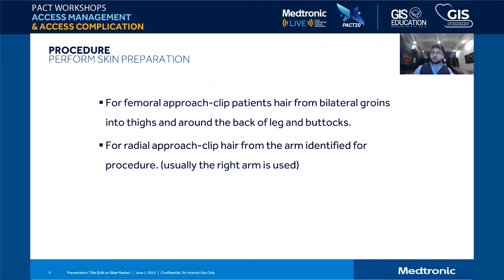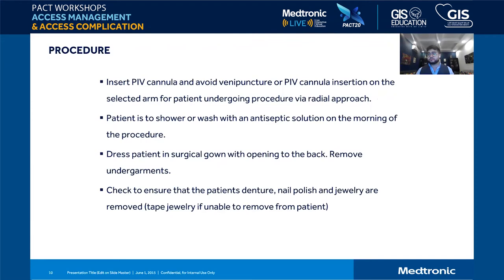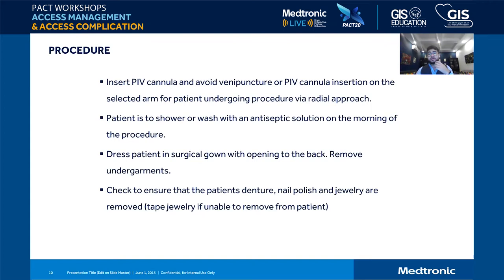We stopped asking patients to shave at home and now do it in the cath lab using clippers rather than sharp razors. We prepare bilateral groin and check if any other areas need shaving. A peripheral IV is inserted according to procedure — for right radial we keep the IV in the left arm, not the left hand, so we can go left radial if needed. Patients should shower before arriving. The surgical gown should not have metal buttons as they may appear on X-ray.